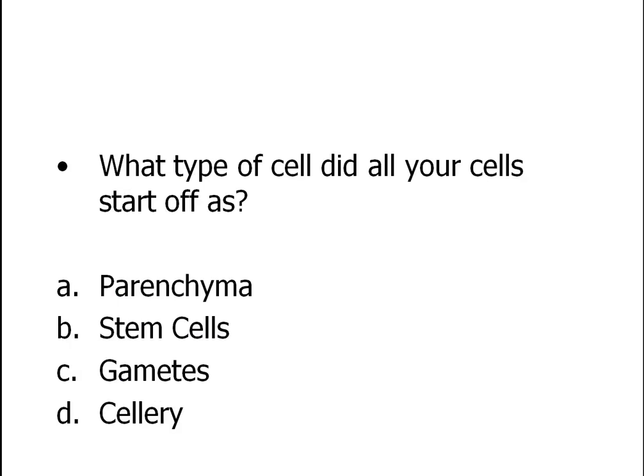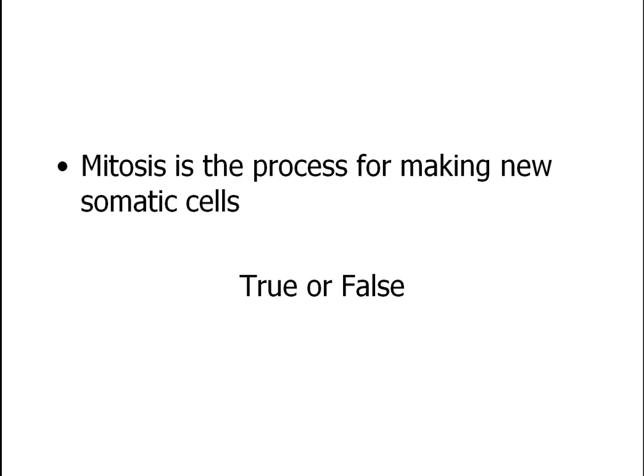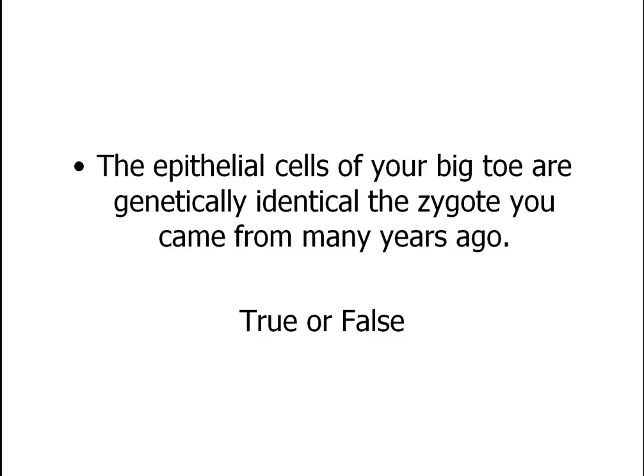All your cells start off as a generalized type of cell called a stem cell, and stem cells can become any type of cell in your body. Remember, somatic cells are body cells. All the cells in your body are clones of each other from that original fertilized egg.